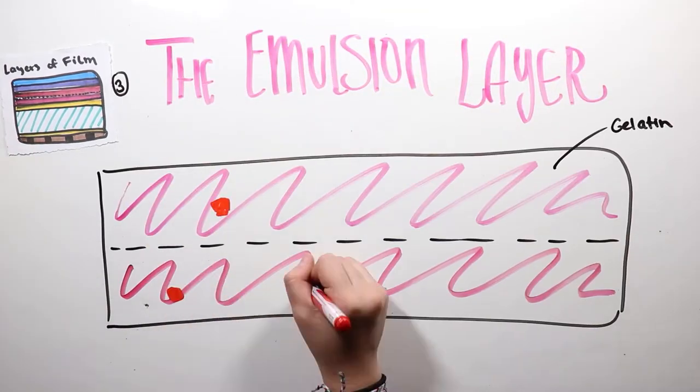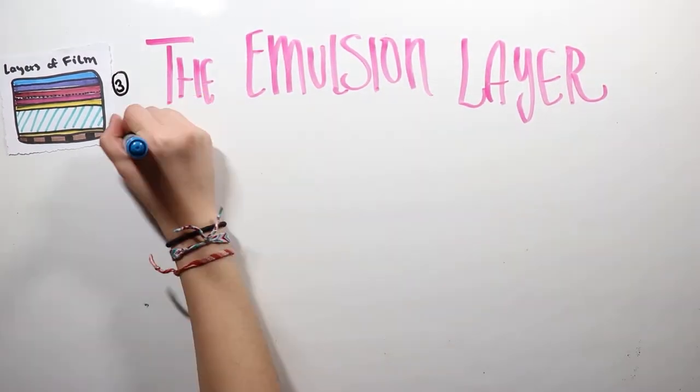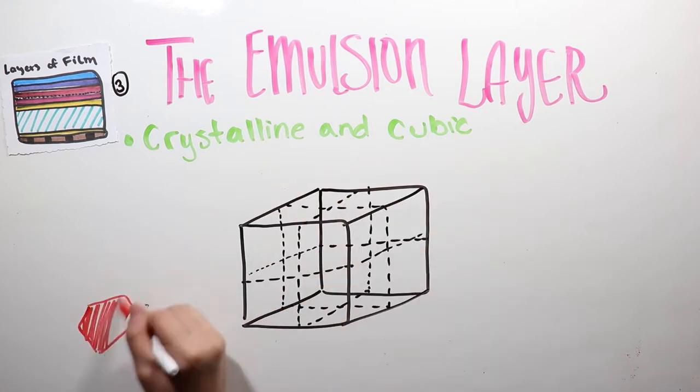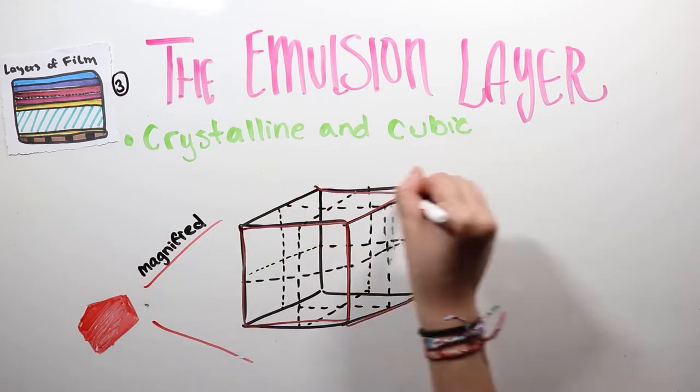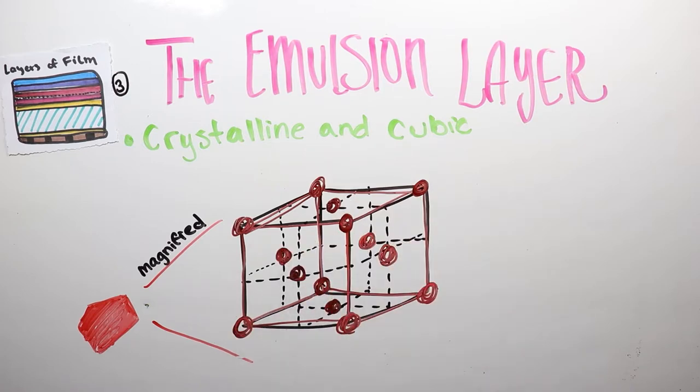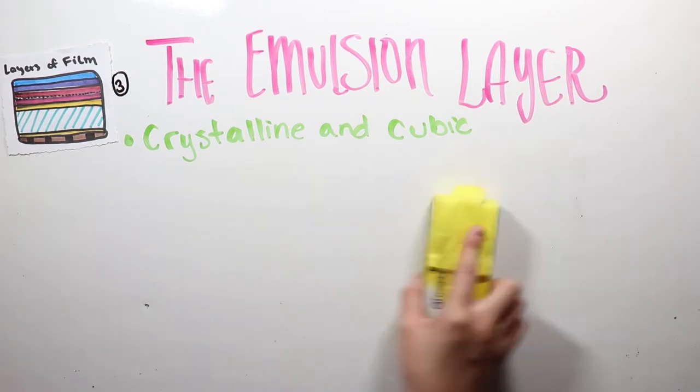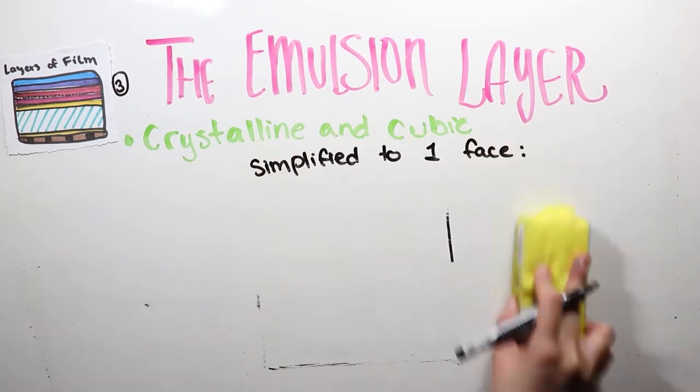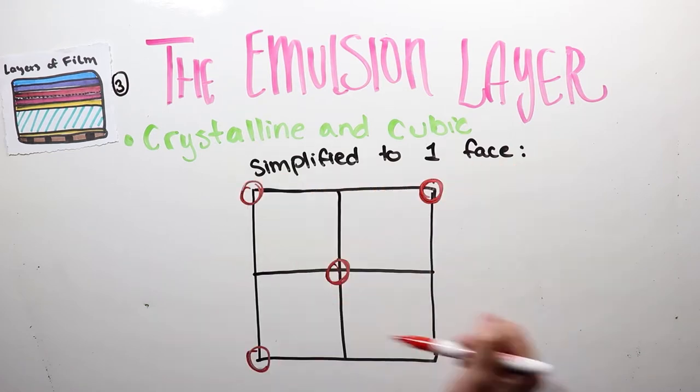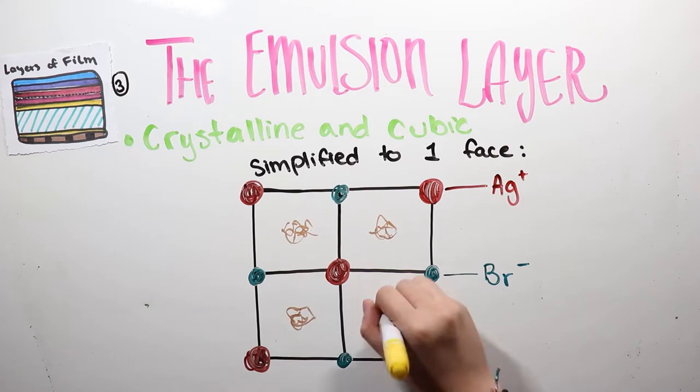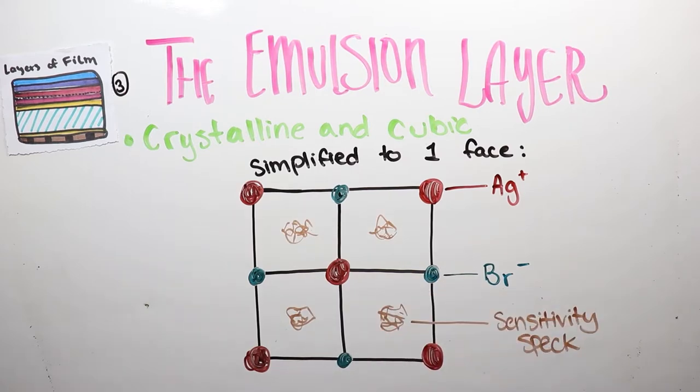The suspended silver halide crystals are crystalline and cubic in structure. In these structures, they contain silver ions, halide ions—in this case Br- ions—and sensitivity specs. These specs are impurities such as silver sulfide, and these impurities are important because they play a crucial role in trapping photons from the light. If the crystal structure was perfect, then there would be no reaction.